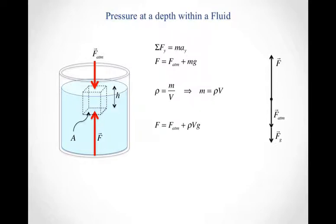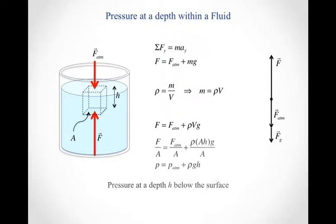And so what it gives me is this expression, that, again, the force pointing up from the bottom, the magnitude of that force has got to be equal to the magnitude of the force due to atmospheric pressure, plus the density of the fluid times the volume of my cube times gravitational acceleration. And now I can divide that equation by the area.